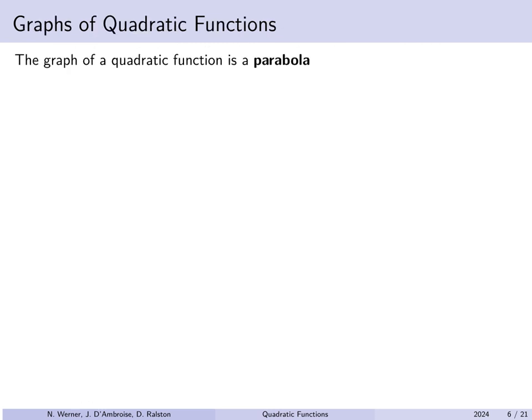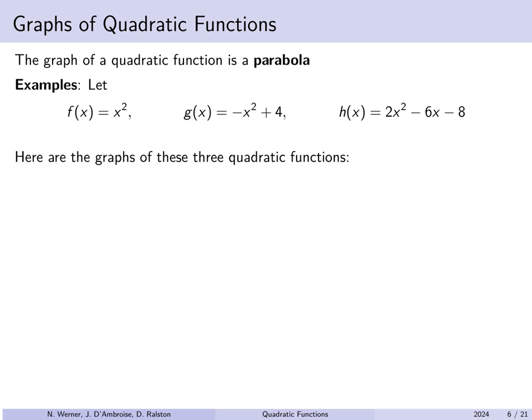How do we graph quadratic functions? The graph of a quadratic function is a particular shape called a parabola. For example: f(x) = x², g(x) = −x² + 4, and h(x) = 2x² − 6x − 8. Here are the graphs of these quadratic functions. For f(x) = x², plotting a couple of points: if x equals 0, then y equals 0; if x equals 1, 1 squared gives y equals 1.